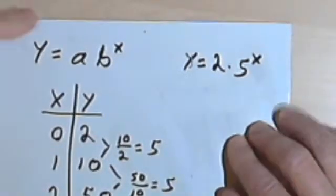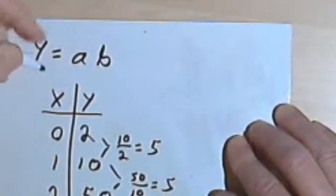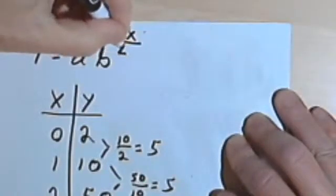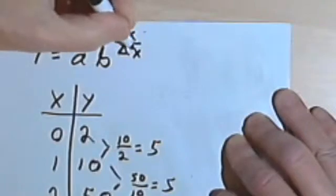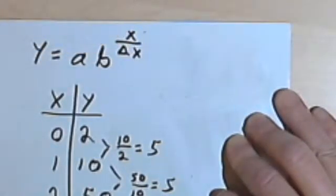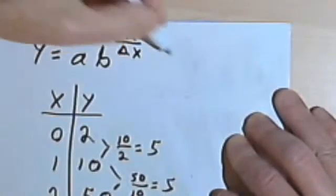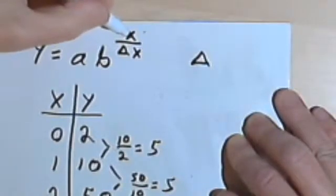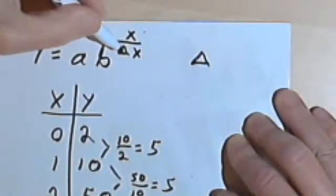Okay? Now I'm gonna change a couple of numbers in this. What if I change this to y equals ab to the x over delta x? In math, delta is this triangle. Delta means the change in something. So I want x over the change in x. Let's see if we can figure out what that means.